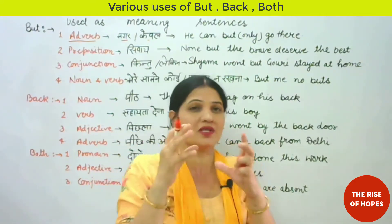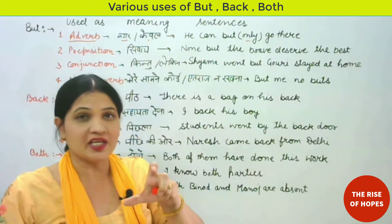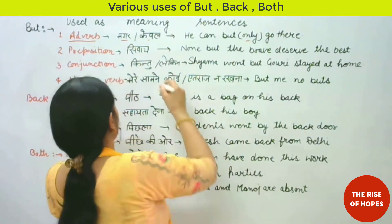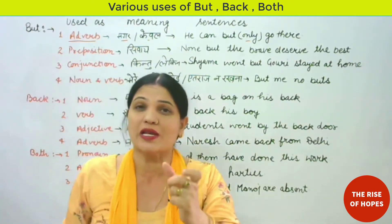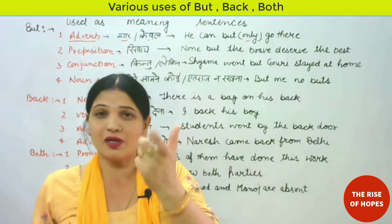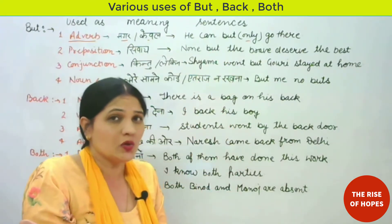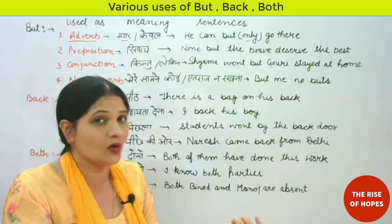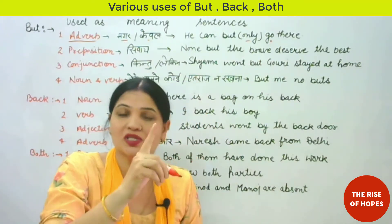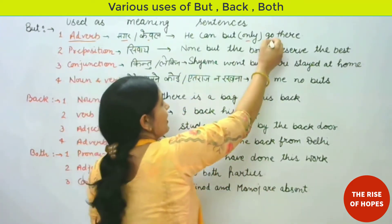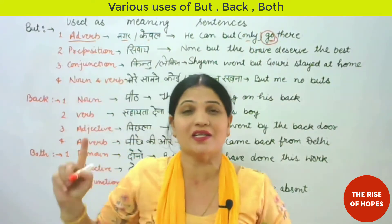'He can but go there' — here 'but' is giving the sense of 'only'. We know that an adverb is a word which qualifies a verb. Here it is qualifying the verb 'go' — only go there. So 'go' is being qualified, that's why here 'but' is used as an adverb.